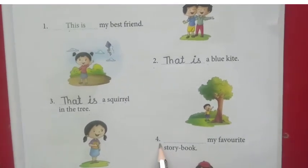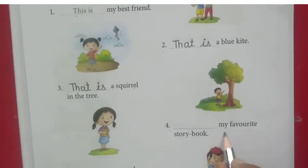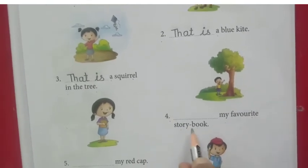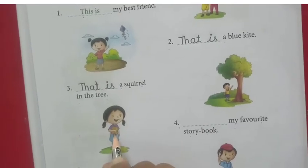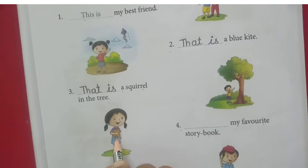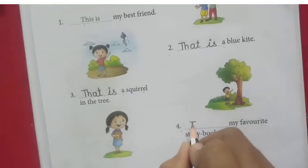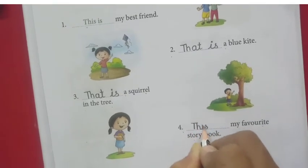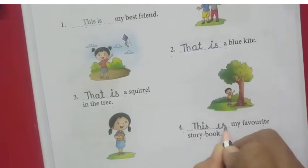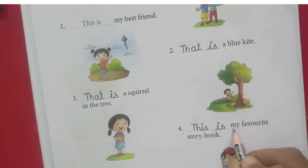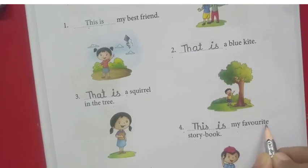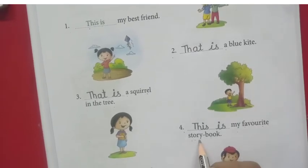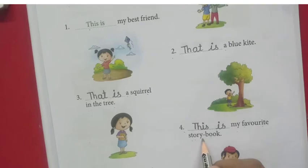Number 4. Dash — my favorite story book. Story book is nearby or far away? It is nearby. So, what we have to use? 'This.' This is my favorite story book.